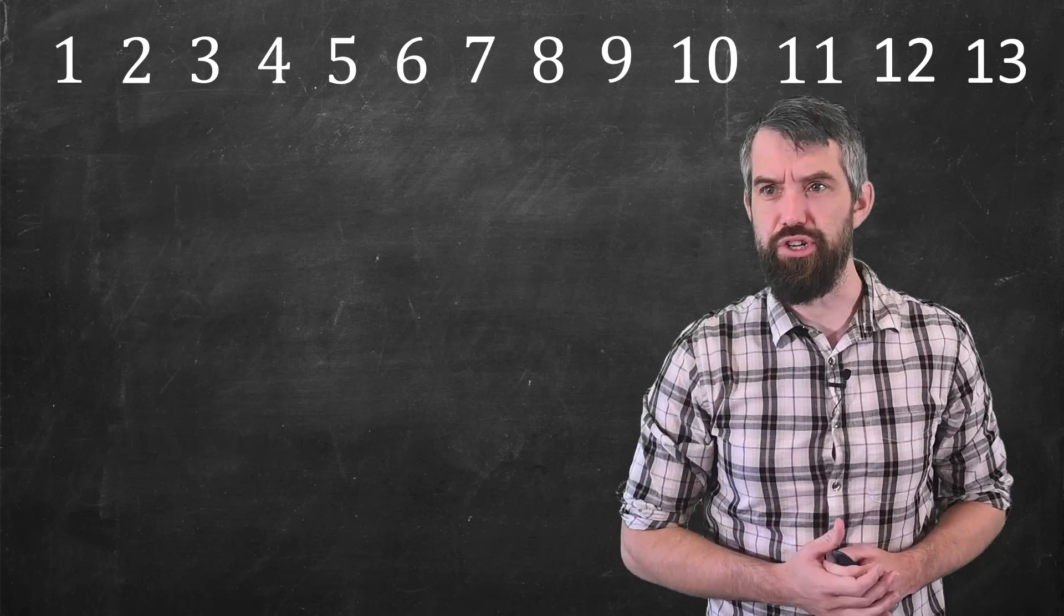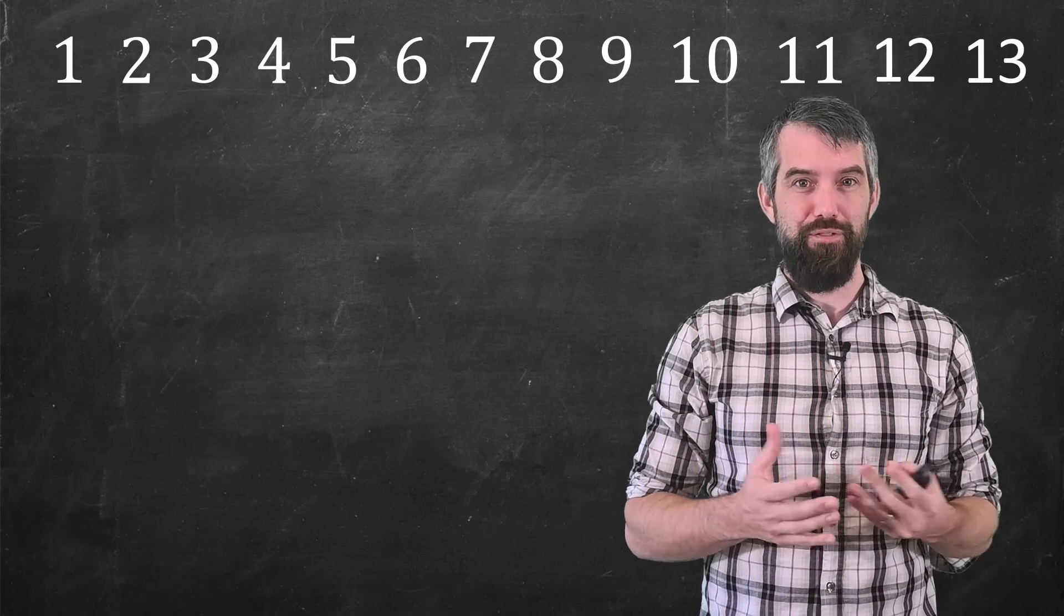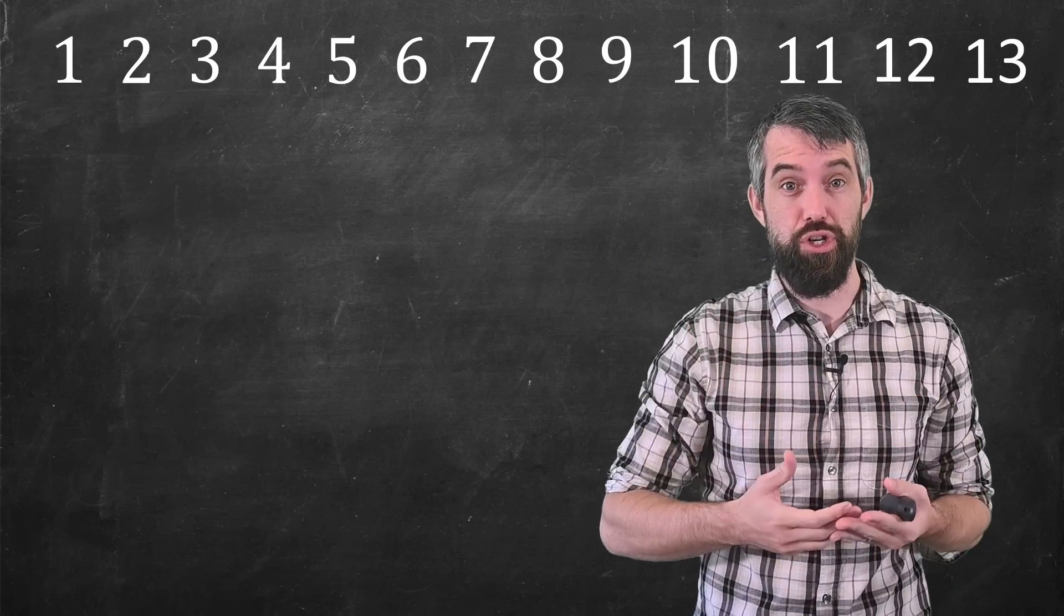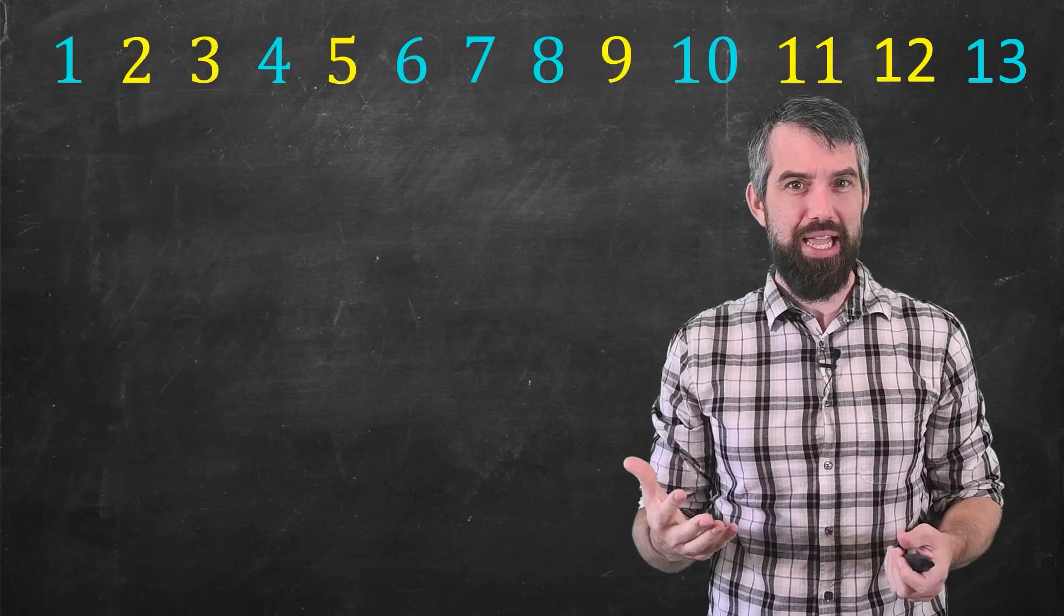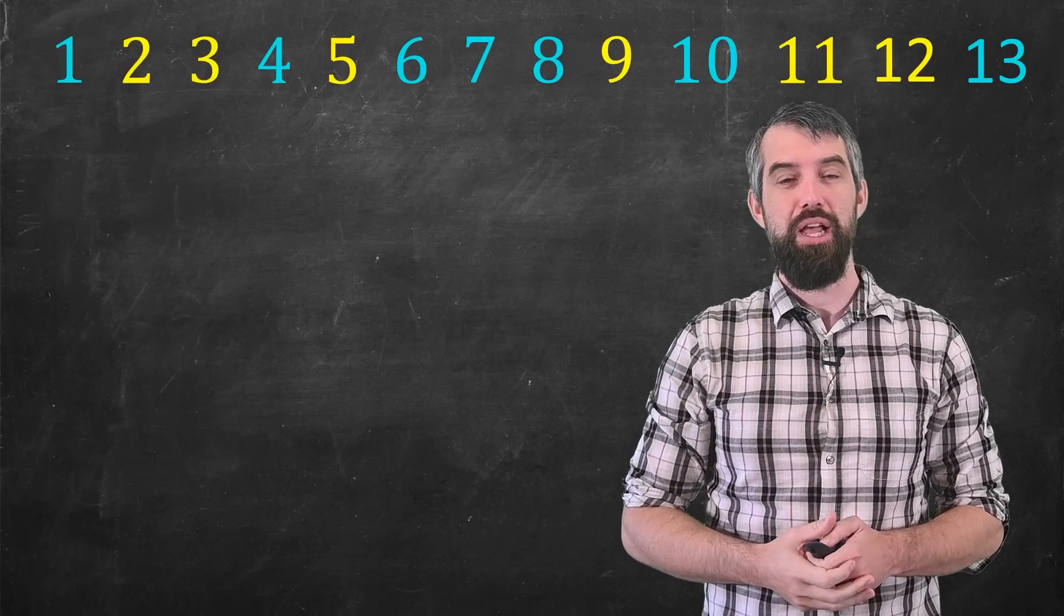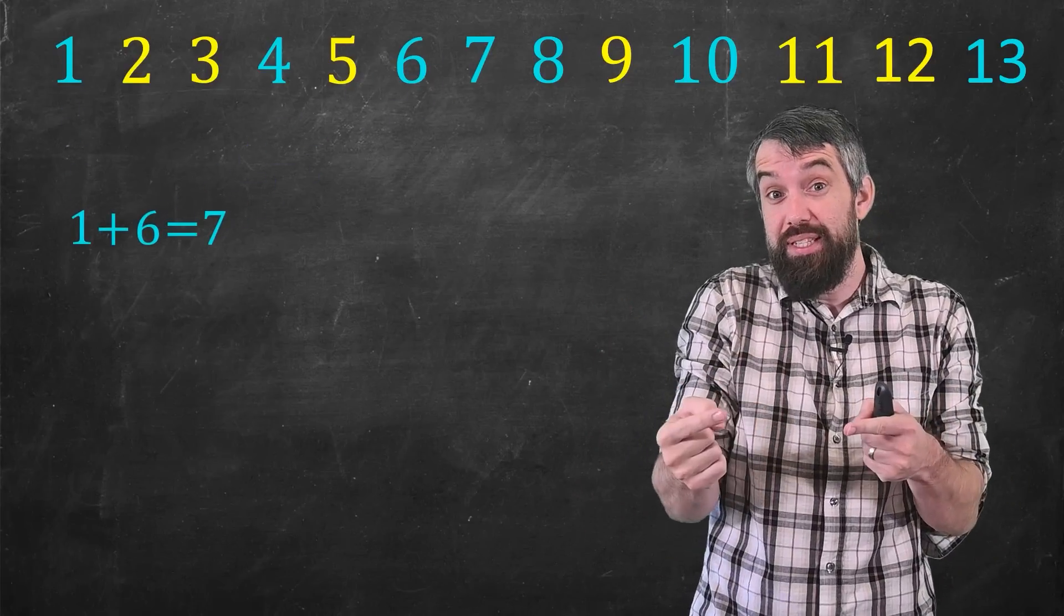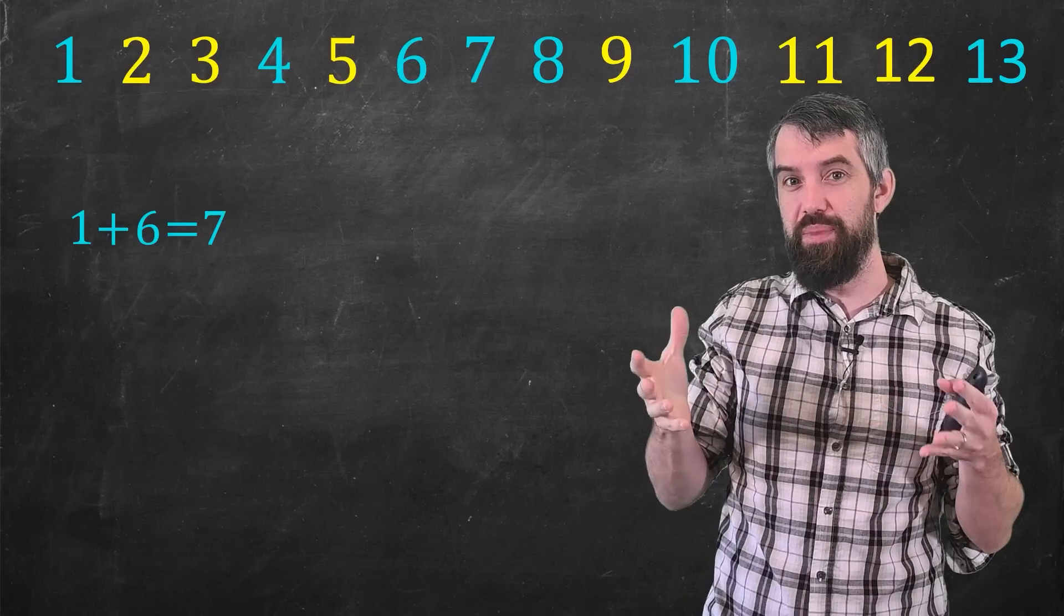Consider a bunch of integers 1, 2, 3, 4, and so forth. If I try to color these integers with two different colors, you'll notice that I get a bunch of triples. Like, for example, there's the number 1 plus 6 equal to 7. All three of these numbers are the same color blue.